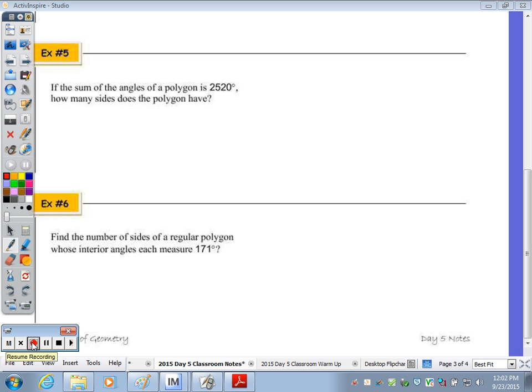In number 5, if I were to do some translating, it says if the sum of the angles of a polygon is 2,520. When it's talking about the sum of the angles, it's talking about the sum of the interior angles. And that formula, because it says how many sides does it have, n is always our number of sides, the formula to find the interior angle sum is n minus 2 times 180 is equivalent to 2,520.